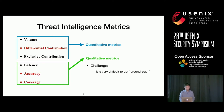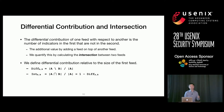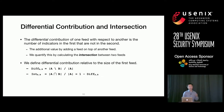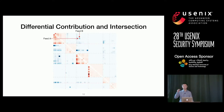We will demonstrate results under three of these metrics, focusing on IP feeds. First, differential contribution: the differential contribution of one feed with respect to another is the set of indicators the first feed has that the second feed does not. It measures the additional value one feed can add on top of another. We quantify this by calculating the complement of the intersection between two feeds, and we define the intersection rate as the overlap of two feeds divided by the size of the first feed. This diagram shows the pairwise intersection rate of all 47 IP feeds, where each cell represents an intersection rate between two feeds.